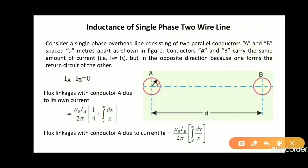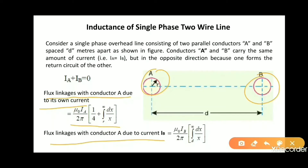As we have already discussed about flux linkage — a very important topic. Now, the flux linkage with conductor A due to its own current will be given by: mu₀ times Ia divided by 2π, into the quantity (1/4 plus the integral from R to infinity of dx/x).